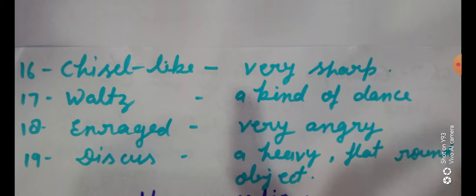Waltz: a kind of dance — ek tarah ka dance hota hai. Enraged: very angry — bahut gusse mein. Discus: a heavy, flat, round object — discus sports mein ek game type ki hoti hai jisko feka jata hai.